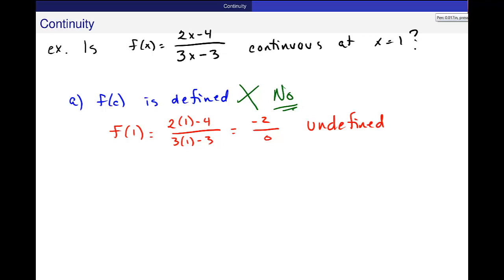And we can reach a conclusion. Well, I don't even have to do the other two tests. F(x) equal to this rational function is not continuous at x equal to 1. It has a discontinuity at x equal to 1.